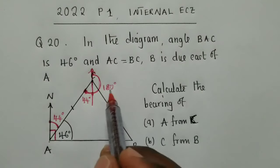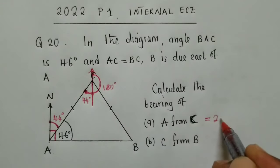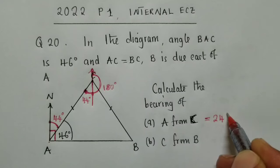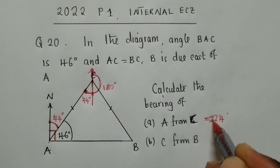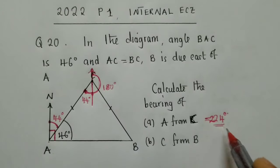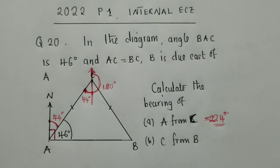So, we just add these two. So, 44 plus 180, we are getting 240, I mean, 224, sorry, 224 degrees. This is our solution, 224 degrees.